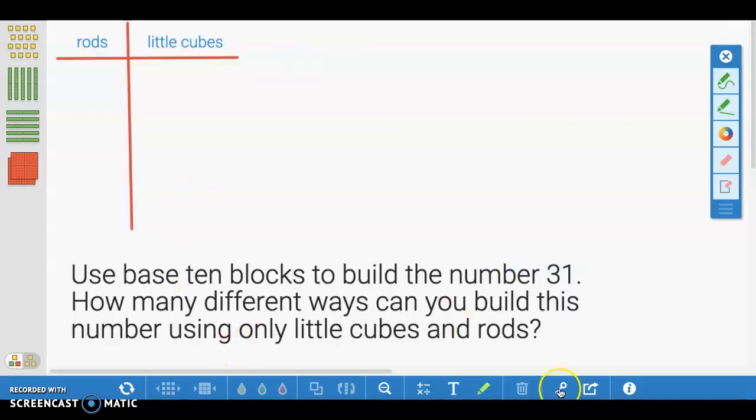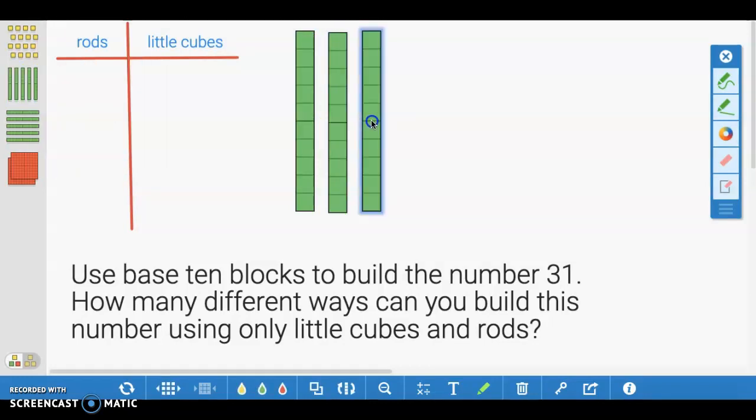Now, if we were to try to answer this question, how many different ways can you build the number 31 using only little cubes and rods? We can show this first by having one 10, and then 20, 30, 31. And this is represented with three rods and one little cube.